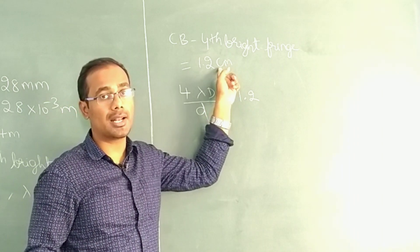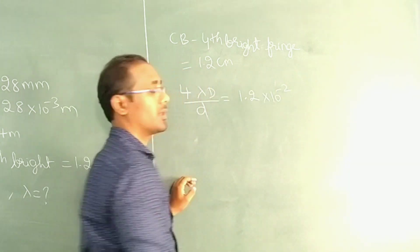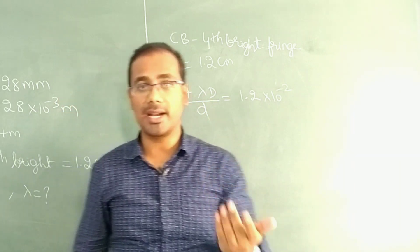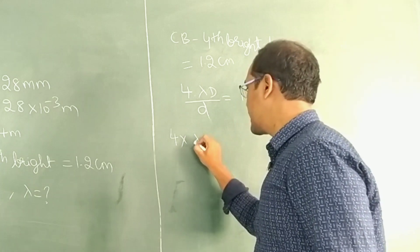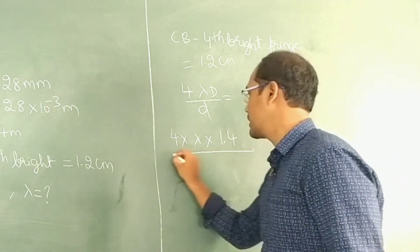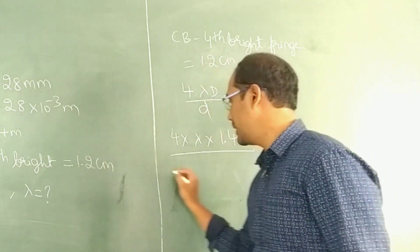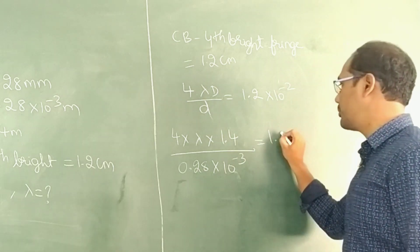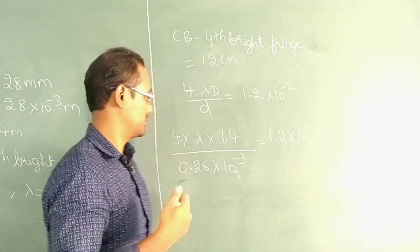Converting centimeter to meter: 1.2 × 10⁻² meter. Now substituting the values to find wavelength lambda: 4 × lambda × 1.4 meter divided by 0.28 × 10⁻³ = 1.2 × 10⁻² meter.